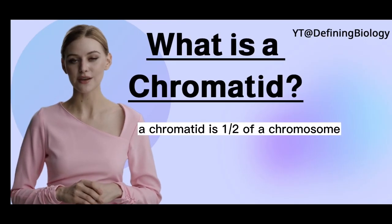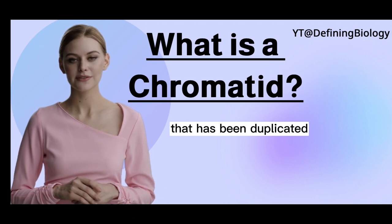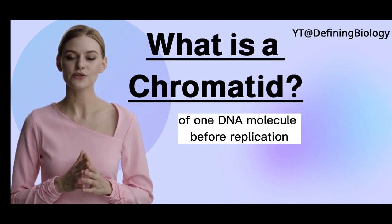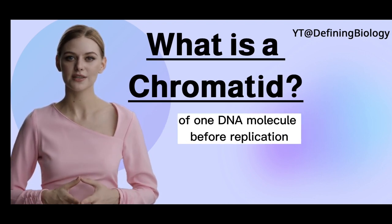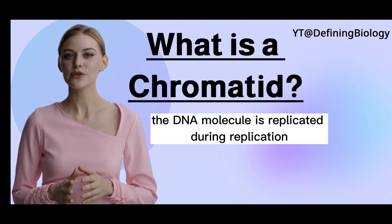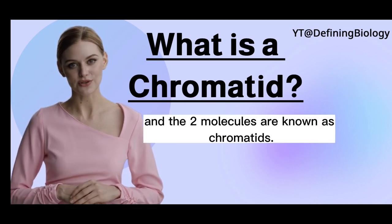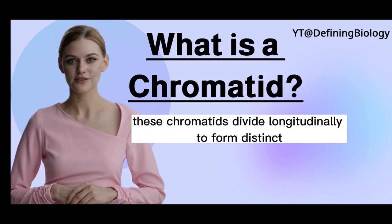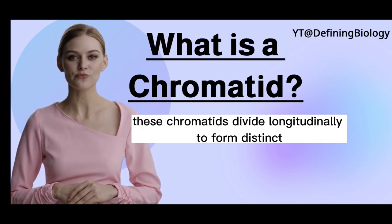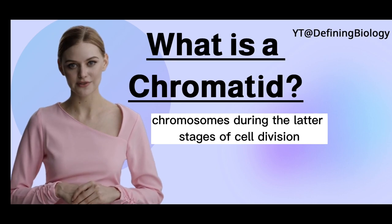A chromatid is one half of a chromosome that has been duplicated. One chromosome is made up of one DNA molecule before replication. The DNA molecule is replicated during replication, and the two molecules are known as chromatids. These chromatids divide longitudinally to form distinct chromosomes during the latter stages of cell division.